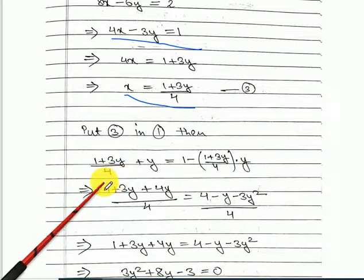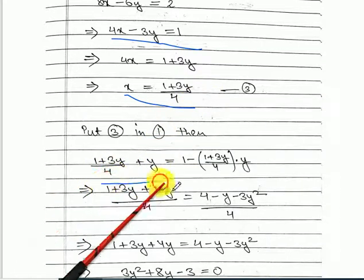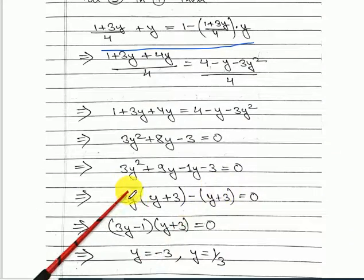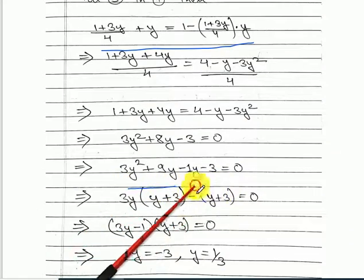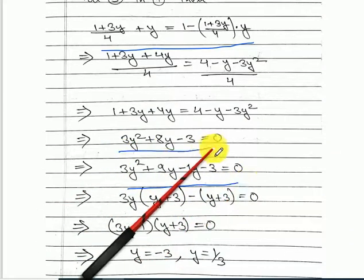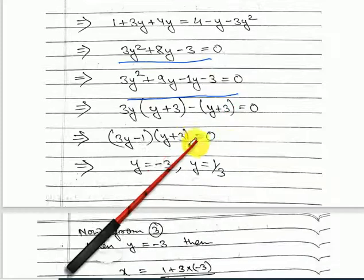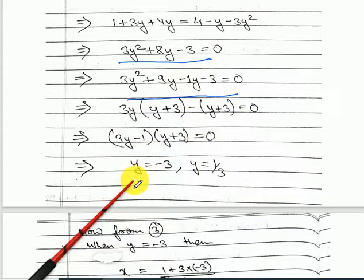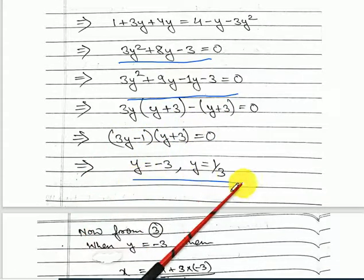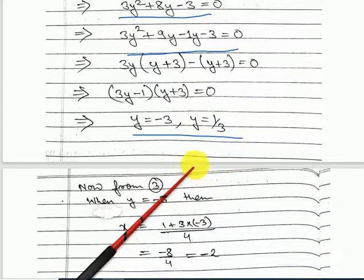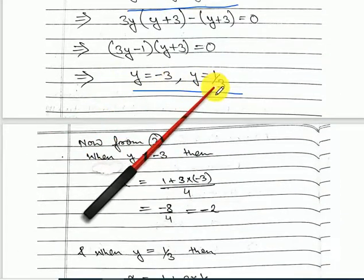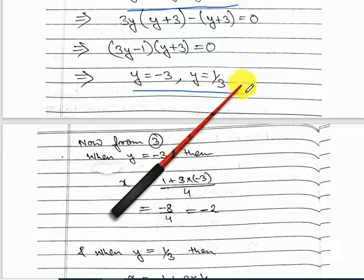Use equation 3 in equation 1. By substituting, simplify to get a quadratic equation in y. Solve that quadratic equation and get two values for y: y equal to minus 3 and y equal to 1/3.